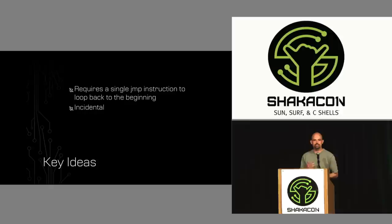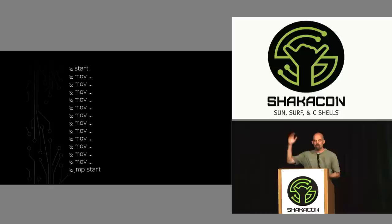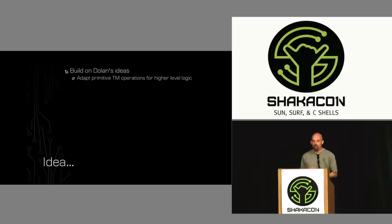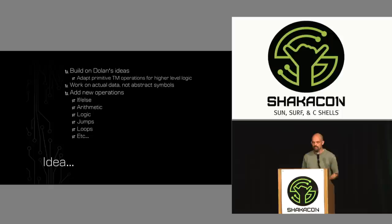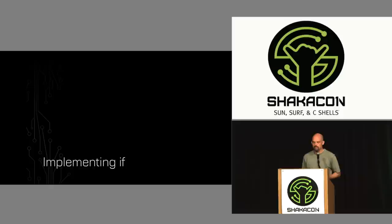Dolan also noted his move Turing machine would require a single jump instruction at the end to loop back to the beginning. At a high level, a move-only program looks like a whole bunch of move instructions with a jump at the very end that loops back, executing moves over and over. Somehow that executes a program. So I thought we could build on Dolan's ideas, adapt these primitive Turing machine operations for higher-level logic, convert it to work on actual data, and add logic for ifs, arithmetic, jumps, loops, and everything else a program needs.